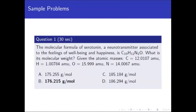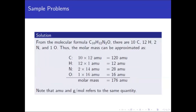The correct answer here is letter B. This is just calculating the molecular weight given the following atomic masses. From the molecular formula C10H12N2O, there are 10 carbon atoms, 12 hydrogen atoms, 2 nitrogen atoms, and 1 oxygen atom.